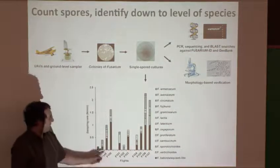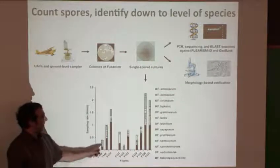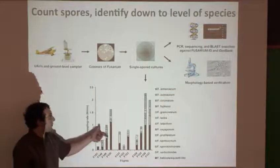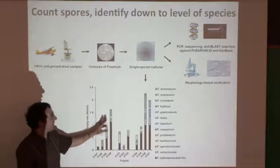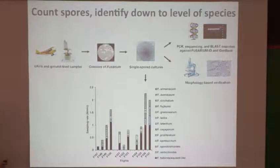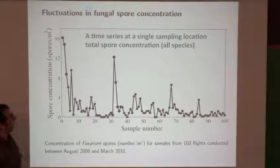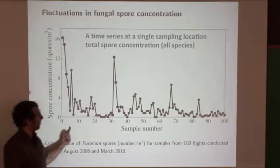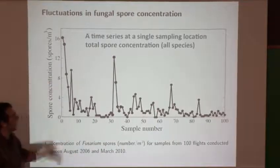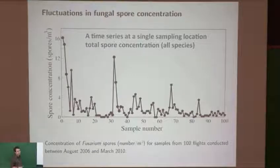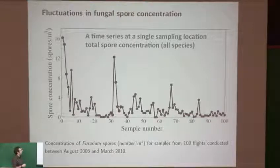For each flight — these are flight numbers — we can decompose what we sampled into numbers of spores broken down by species. If we ignore the species breakdown and just look at total concentration, this represents a nonlinear time axis — actually 100 flights over several years. Conditions have to be right to fly, and it's expensive; you now need an FAA license to fly an actual airplane under new regulations.